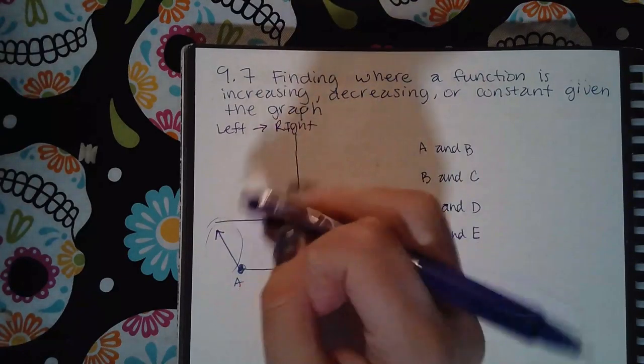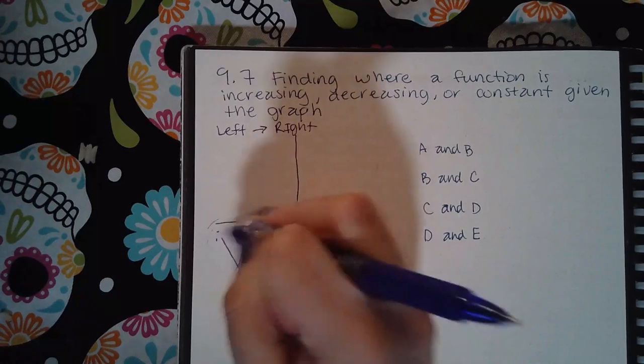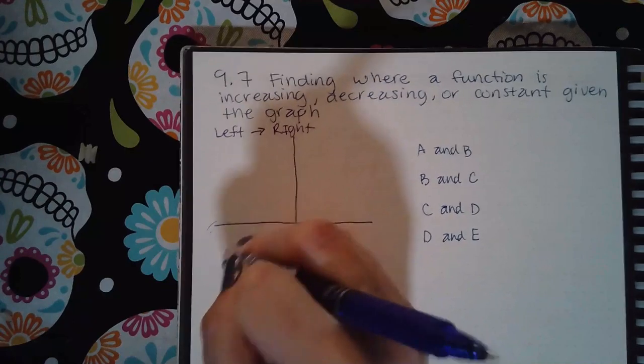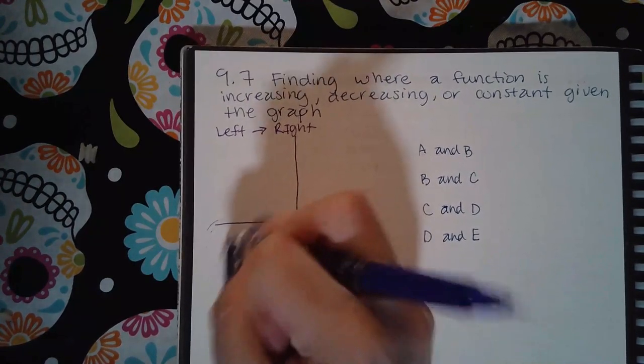So it's very important that you read this from left to right, because if you don't, if you see those arrows on the left sides of the graph, you're going to write the wrong answer. Okay, you need to read them from left to right.